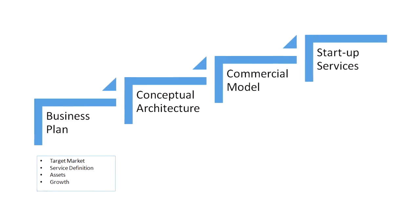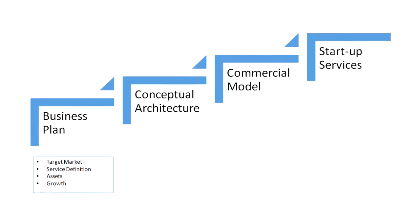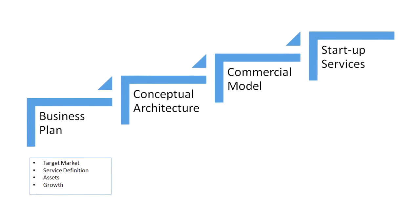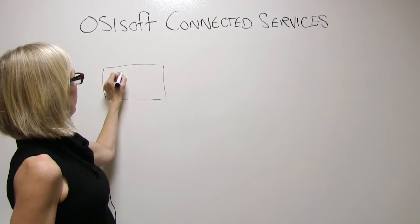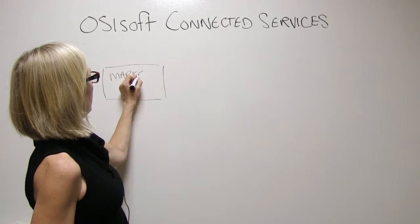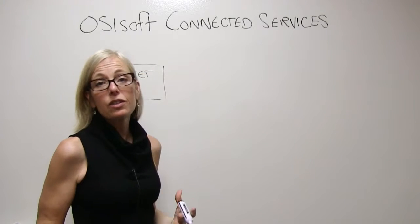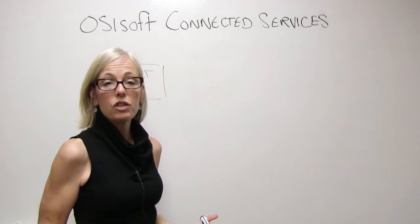When we start engaging on a Connected Services Agreement, there are a few things that need to be in place. The service provider has to provide a business model, which means they need to define their market, know the space in which they're going to provide services, have an idea of who their customers are, and have a plan for growth.